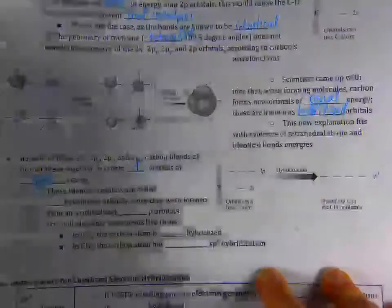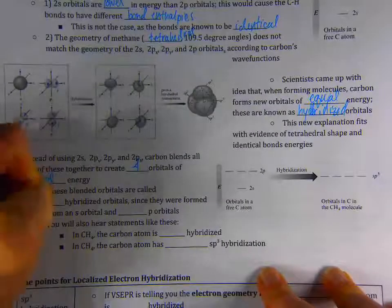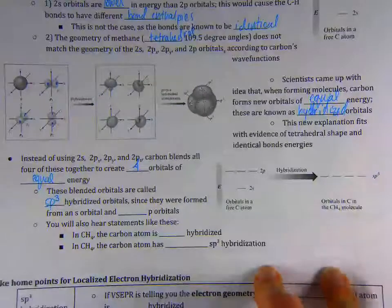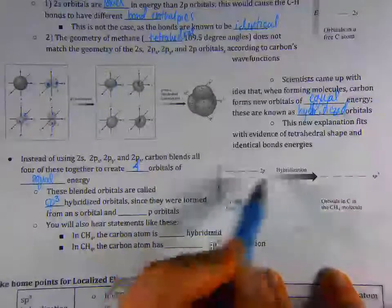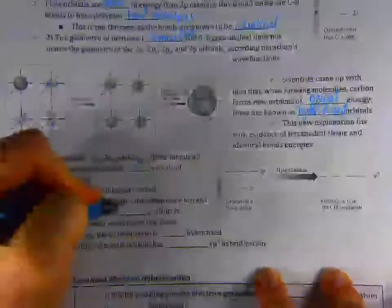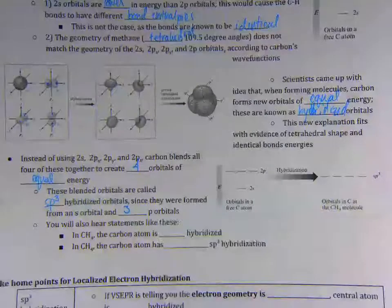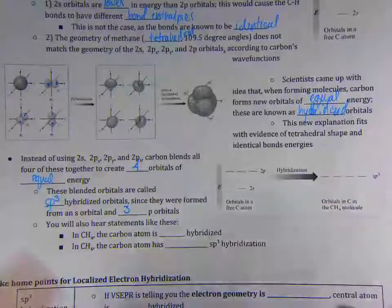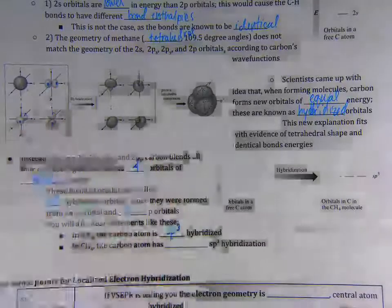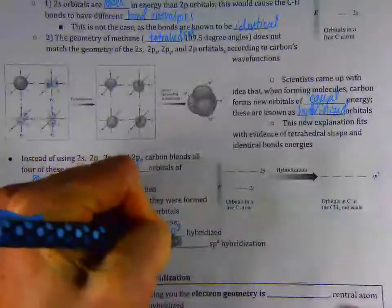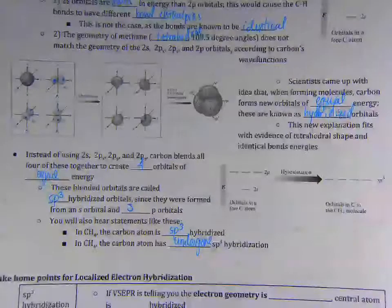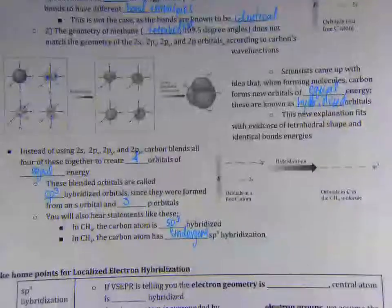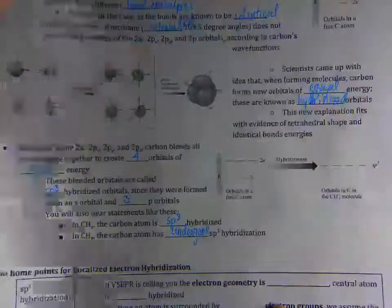These blended orbitals, or hybridized orbitals, we call them sp3 orbitals. And the reason that we call them sp3 orbitals is pretty simple. It's because they came from an s orbital and three different p orbitals. You'll also hear statements like this. In CH4, the carbon atom is sp3 hybridized. That's how you could use this terminology. Or it's undergone sp3 hybridization. Any of these would be correct ways to talk about the blended orbitals that exist. And I'll show you some more things in class if we have time for it. But here are the take-home points for orbital hybridization.